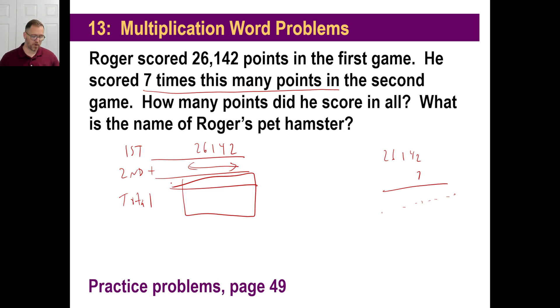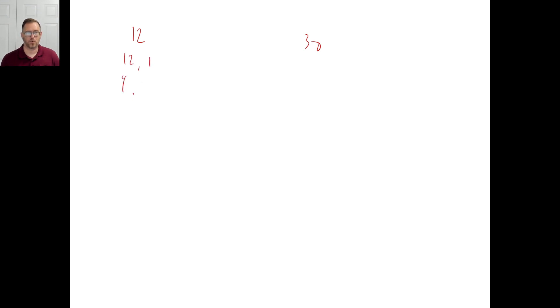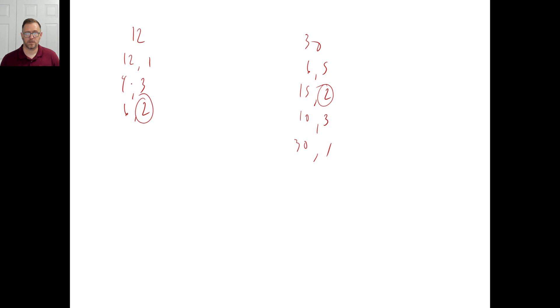Let's take a look at page 49 — go ahead and pause the video. We have three problems. Go ahead and do the first two and then come back. What are the common factors of 12 and 30? We can list 12 and then 30. For 12, we have 12 and 1, 4 and 3, 6 and 2. For 30, we have 6 and 5, 15 and 2, 10 and 3, 30 and 1. The common factors are 2, 6, 3, and 1.